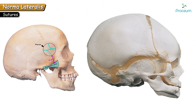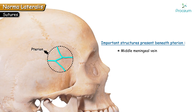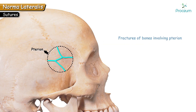Here is a fetal skull shown laterally. In Norma lateralis of the fetal skull, we can see the pterion as a membranous gap. It is an un-ossified membranous gap called the anterolateral fontanelle or sphenoidal fontanelle, and this gap usually closes 2 to 3 months after birth. Clinically, pterion is very important because important structures are present beneath it: the middle meningeal vein, anterior branch of the middle meningeal artery, and deep to these, the stem of the lateral sulcus, also known as the sylvian sulcus.